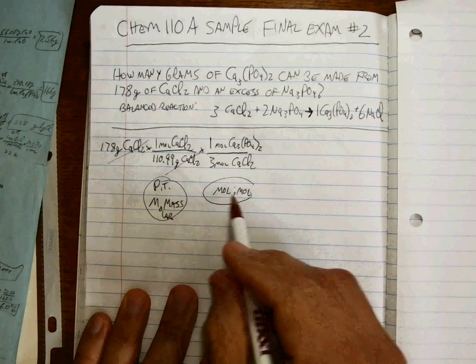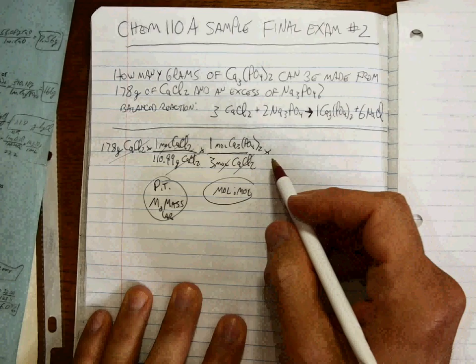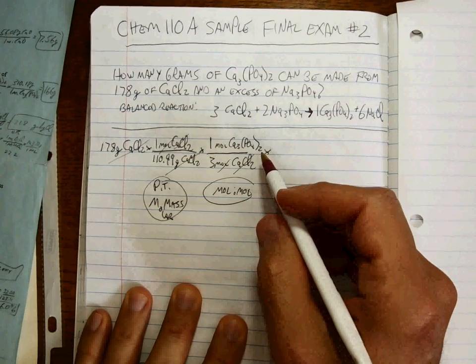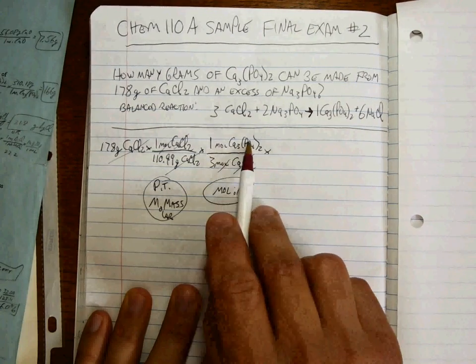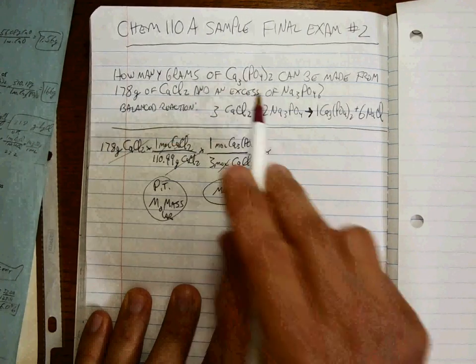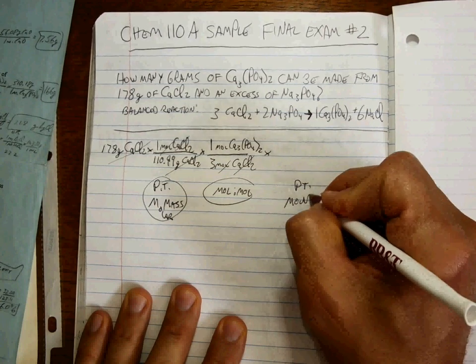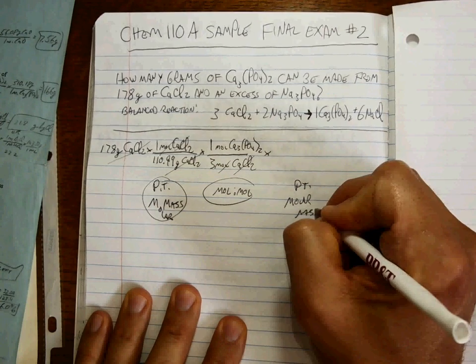I keep doing the same thing over and over again, which is nice because we can get into a good pattern for knowing what to do next. If we start here, we're now at moles of calcium phosphate. We want to know the grams of calcium phosphate. That's periodic table molar mass again. We just flip over the conversion factor.